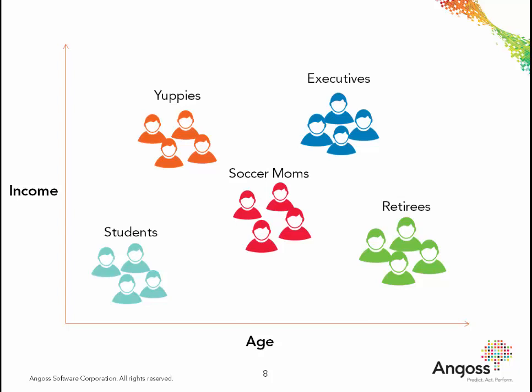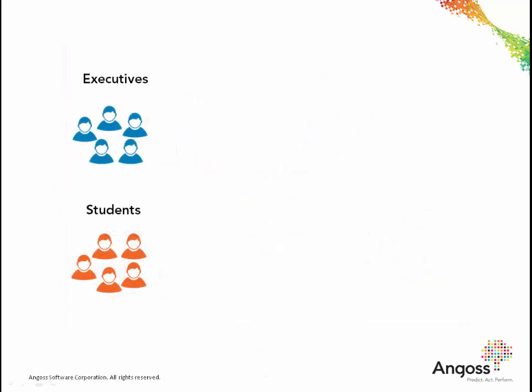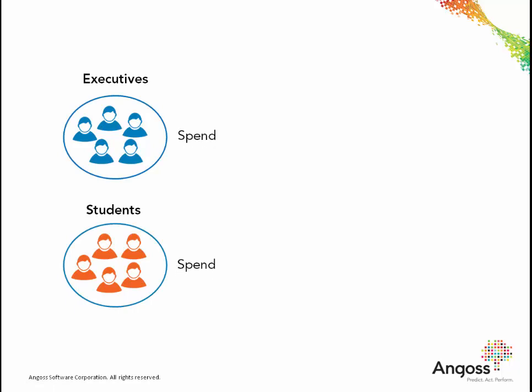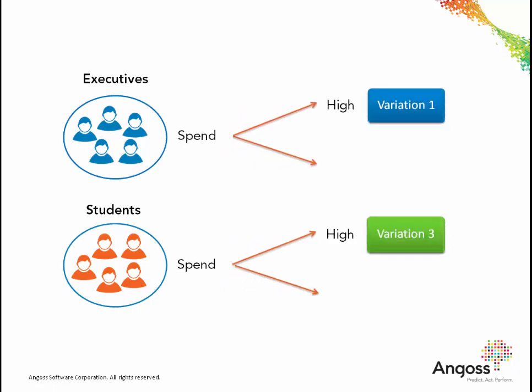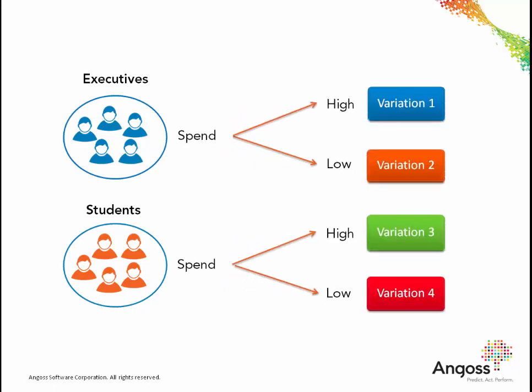Once a clustering algorithm has been employed to identify groups, other metrics or KPIs can be included using ANGOS strategy trees to better tailor products and services.